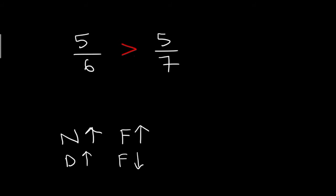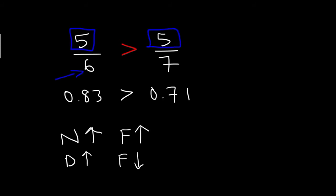We can check it with the help of a calculator. 5 divided by 6 is 0.83, and 5 divided by 7 is 0.71. Which is greater? 0.83 is the greatest. So 5 by 6 is greater than 5 by 7. Keep this in mind: if the numerator is the same, then the fraction with the smaller denominator will have a larger value.